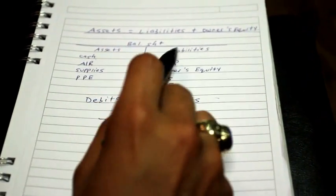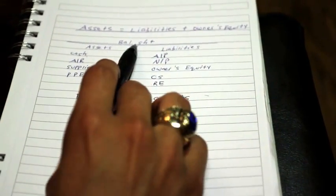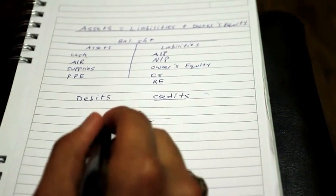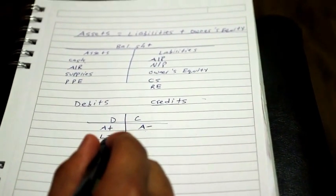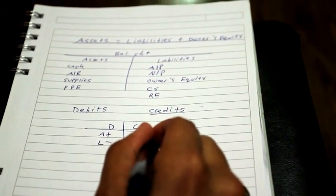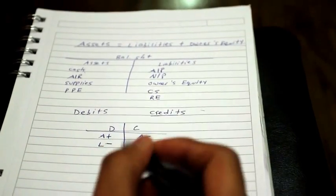Now, because liabilities and owner's equity are on the opposite side of the balance sheet as assets, it has a different effect. When liabilities go down, you debit the liability. When liabilities go up, you credit. Similarly, because liabilities and owner's equity are on the same side, they have the same effect.